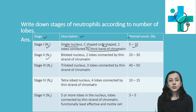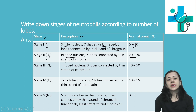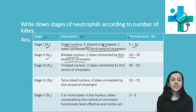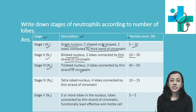Stage 2, also termed N2, has 2 lobes connected by a thin strand of chromatin. Normal percentage is 20 to 30%. Stage 3, also termed N3, has a tri-lobed nucleus with 3 lobes connected by thin strands of chromatin.